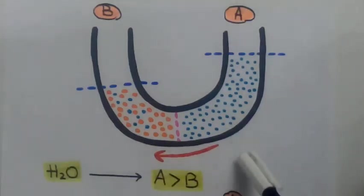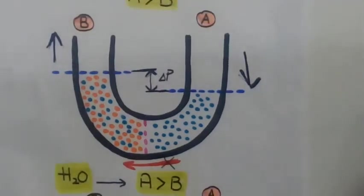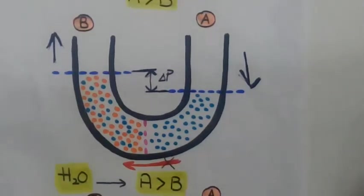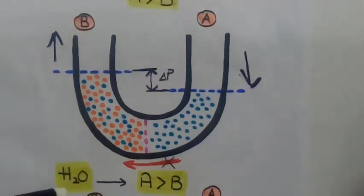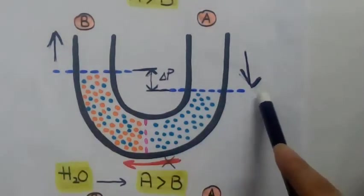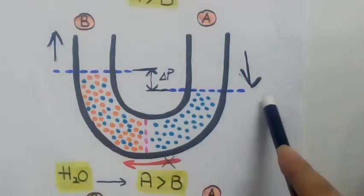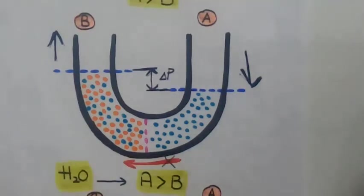This movement of water molecules across the semi-permeable membrane will continue for some time. At this stage, the concentration of water is still greater on side A compared to side B. Because of this movement of water, the level of water on side A will fall and the level of solution on side B will rise.